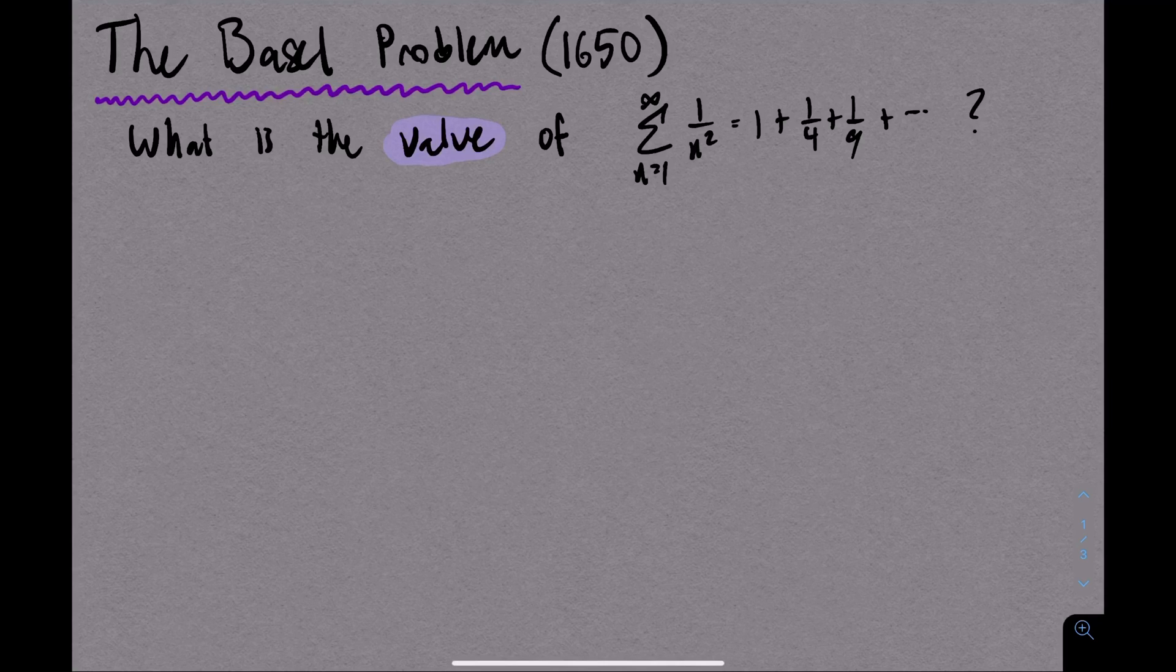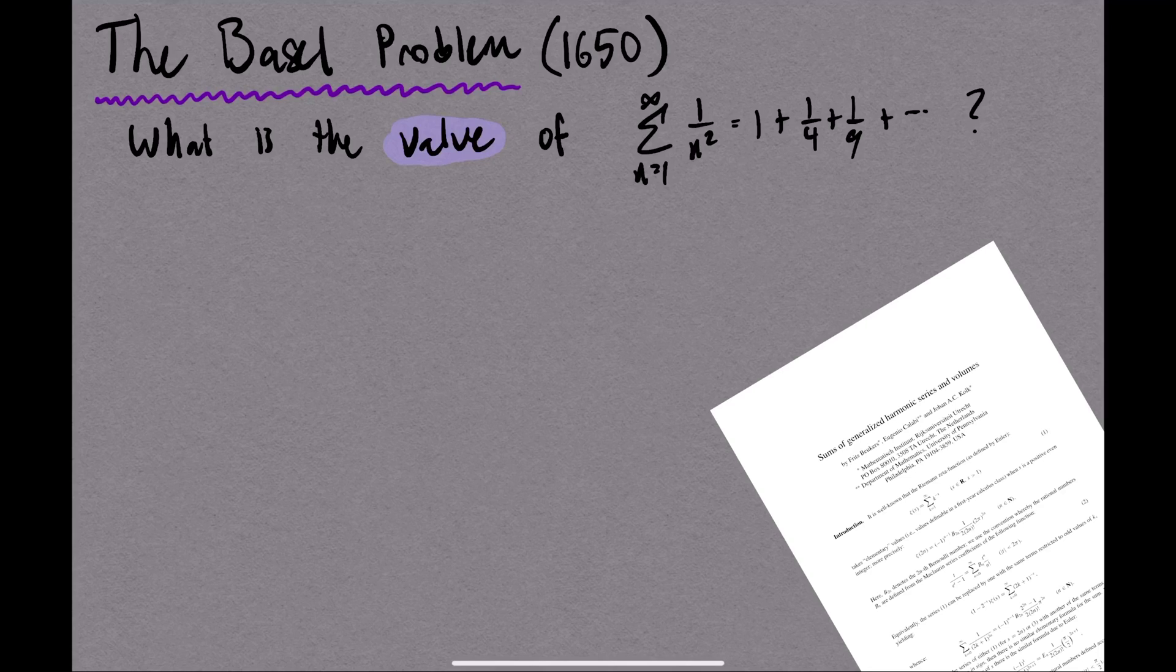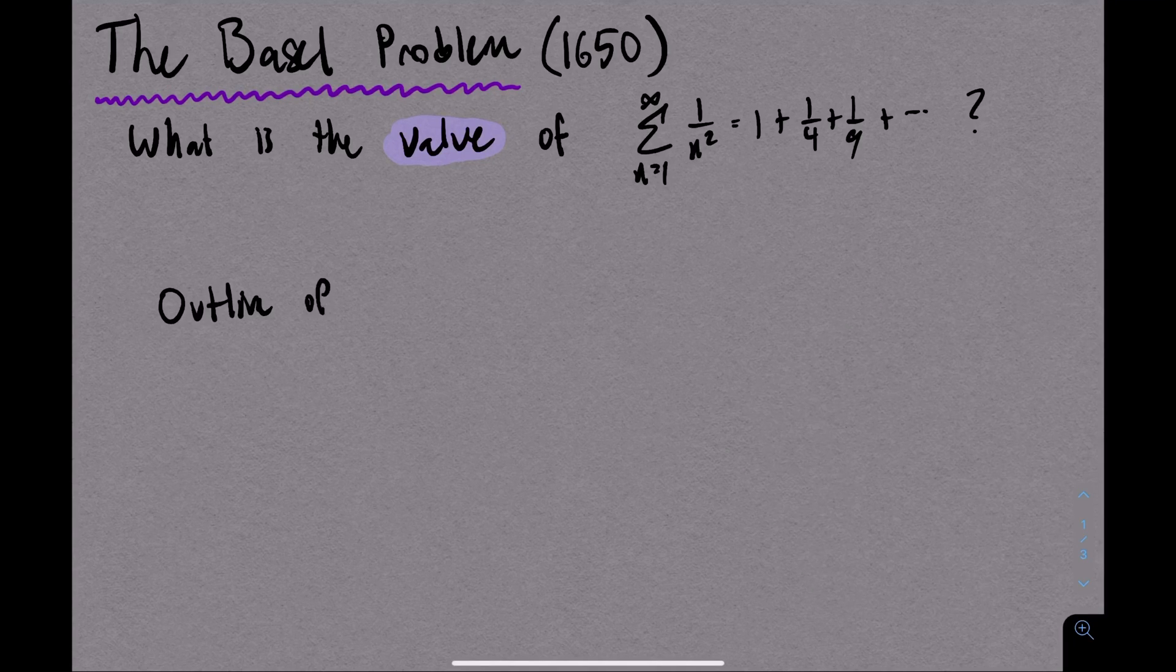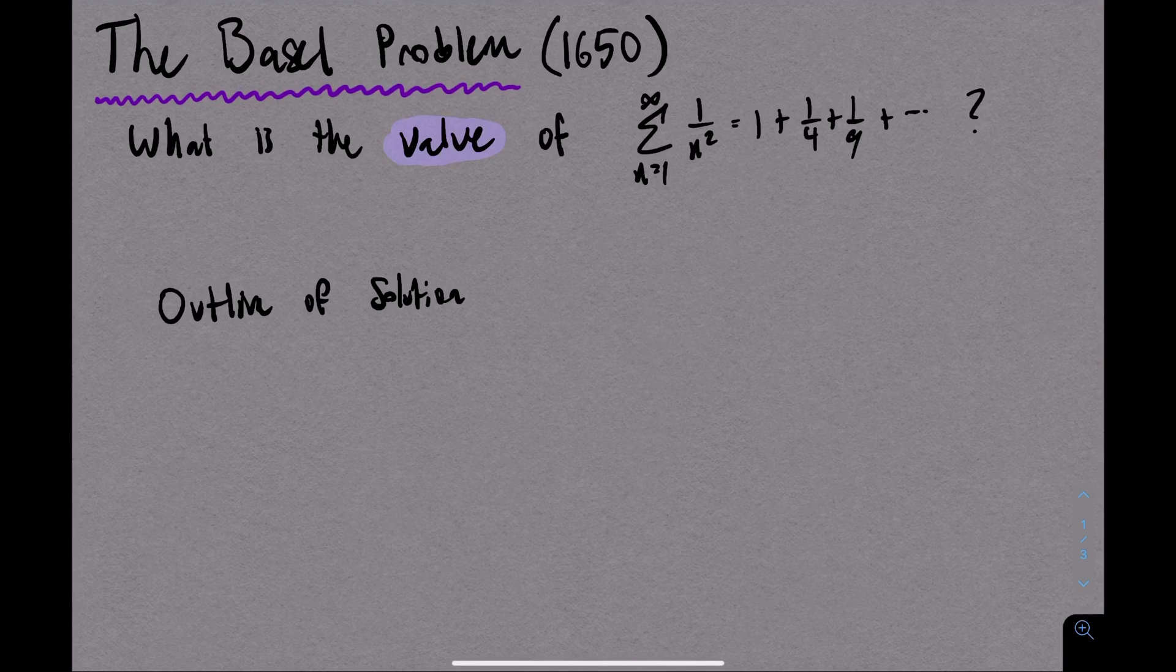It involves turning the infinite sum into a double integral and then using an insanely clever change of variables. It's fascinating that this is such a modern solution because it's completely elementary. I'll put a link to the original paper in the description below if you're curious.